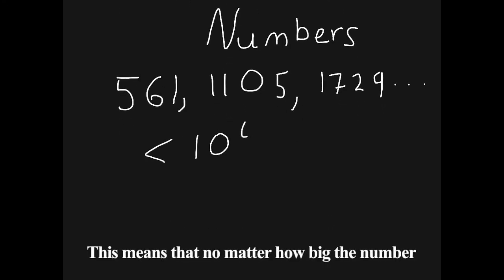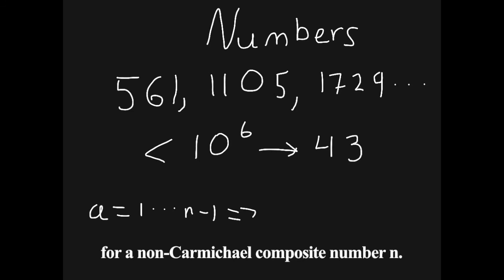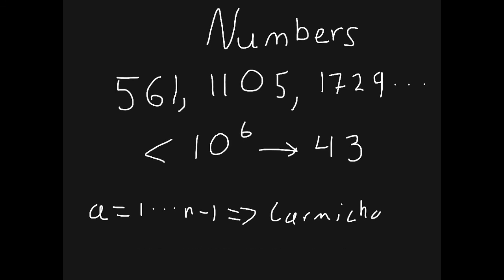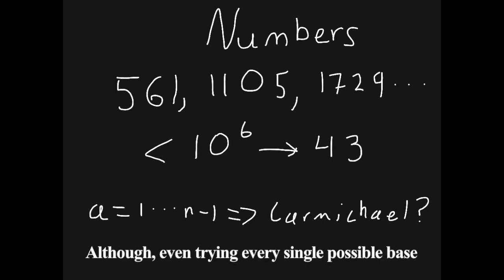This means that no matter how big the number you try to run the Rabin-Miller test on, there is still a chance that the number is a Carmichael number. There is also the probability that the chosen base passes the test for a non-Carmichael composite number n. If it is not Carmichael, then at least one base will fail the test. So the accuracy of the Rabin-Miller test hinges on how many random bases are attempted. Although, even trying every single possible base from 1 to n does not guarantee a prime, as n could still be a Carmichael number.